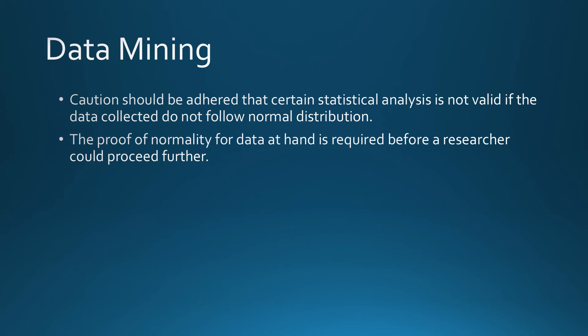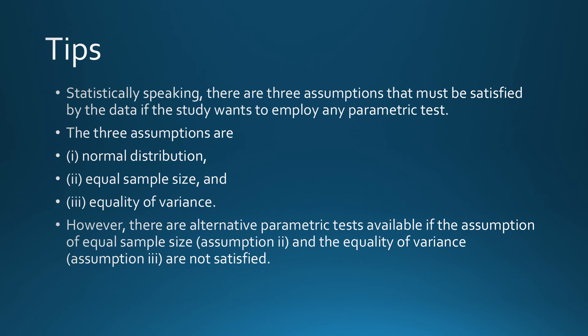Caution should be adhered to: certain statistical analysis is not valid if the data collected do not follow normal distribution. The proof of normality for data at hand is required before a researcher could proceed further. Statistically speaking, there are three assumptions that must be satisfied by the data if the study wants to employ any parametric test. The three assumptions are: 1. Normal distribution, 2. Equal sample size, and 3. Equality of variance. However, there are alternative parametric tests available if the assumption of equal sample size (assumption 2) and the equality of variance (assumption 3) are not satisfied.